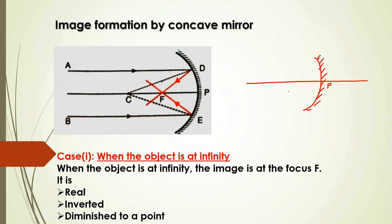The rays are coming from infinity — that means the object is kept at infinity. Remember, if the object is at infinity, the incident rays of light will always be parallel. Whenever the object is at infinity, we consider that rays are coming parallel to the principal axis. This is the first ray. The second ray is also coming parallel — we are following the convenient rules we have seen before.